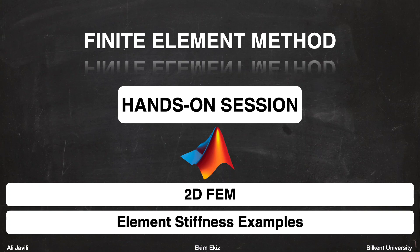Hello everyone. Welcome to another series of hands-on sessions. My name is Ekim. We will look at the 2D finite element method project and go through the code together. We will have four videos in total. The first one will be on the calculation of the element stiffness. The second video will be about the pre-processing part. The third video will be on processing, where we use the stiffness code from the first video. And in the last video we will look at the post-processing part. So let's begin with the element stiffness.